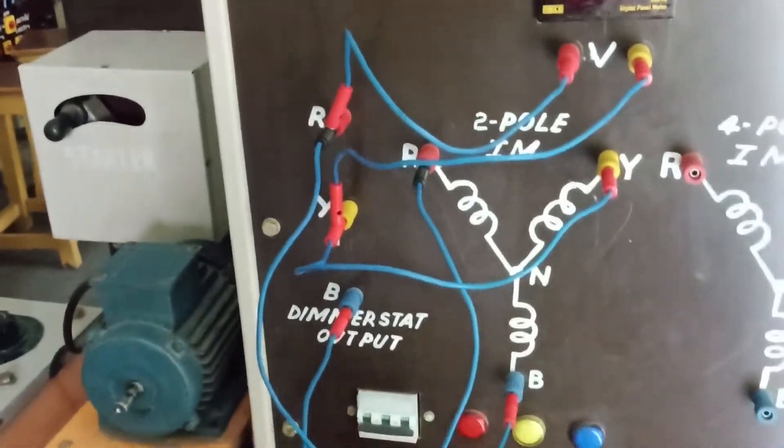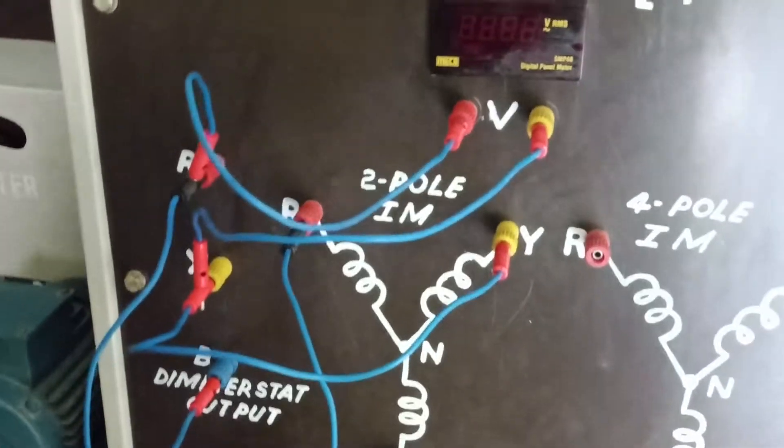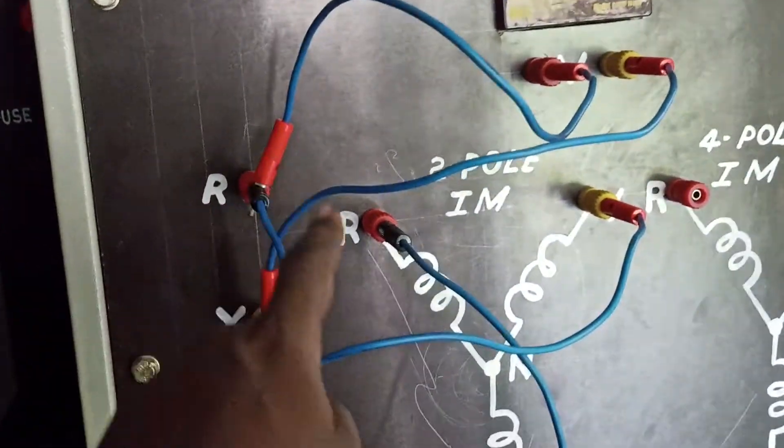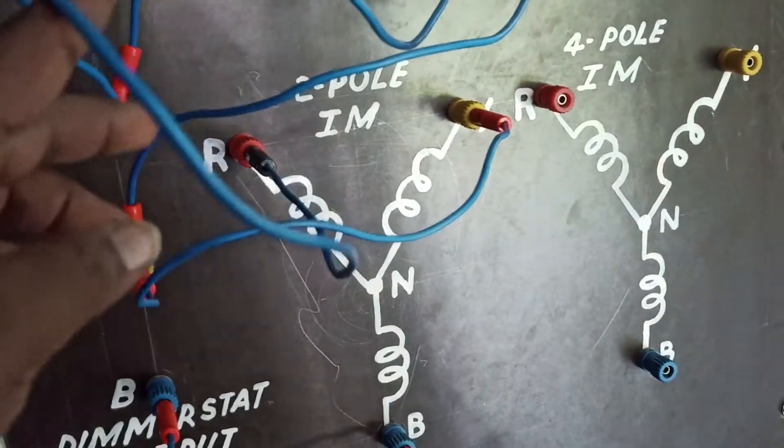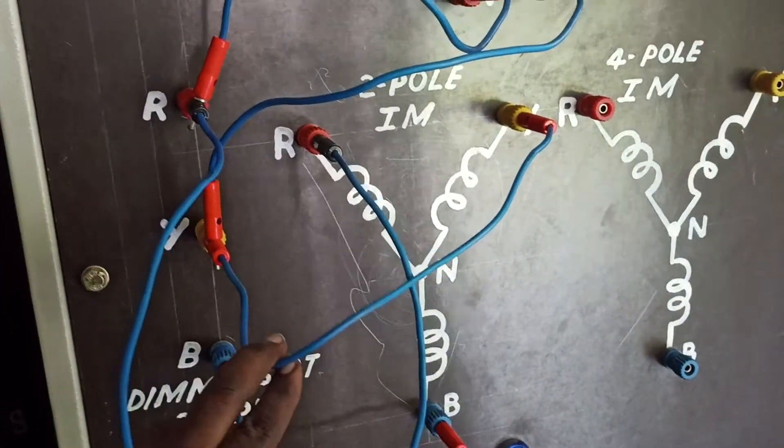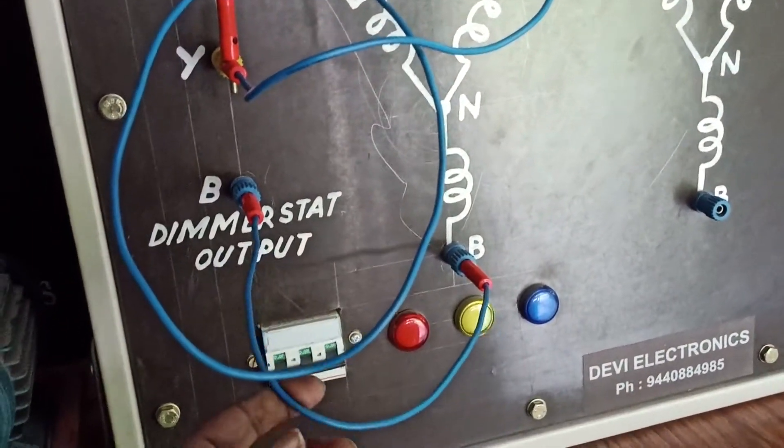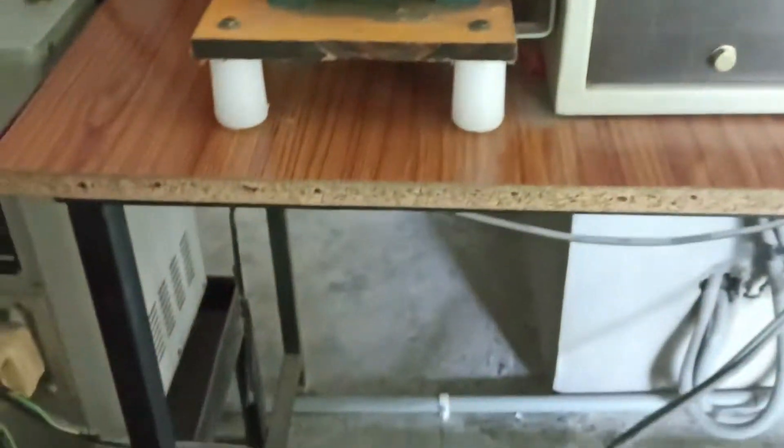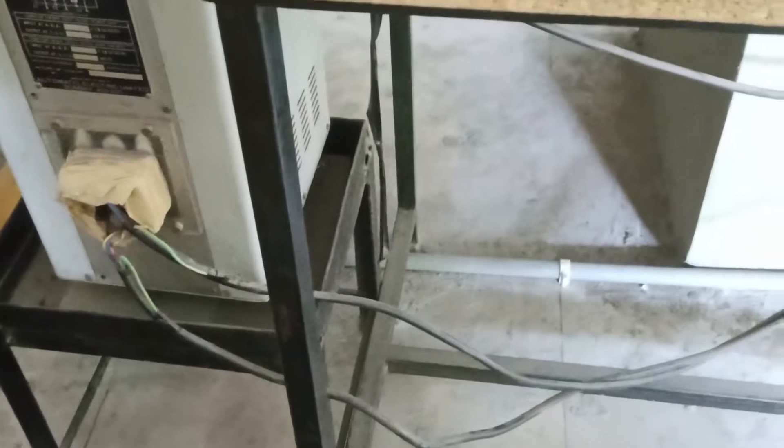Here you can see the connections. I have provided the connections: R to R, Y to Y, and B to B. All these R, Y, B are coming from the autotransformer up there.